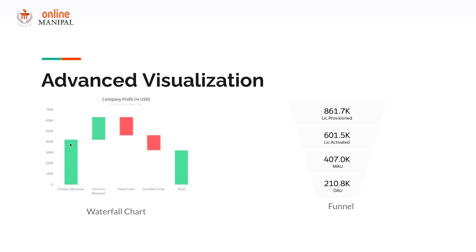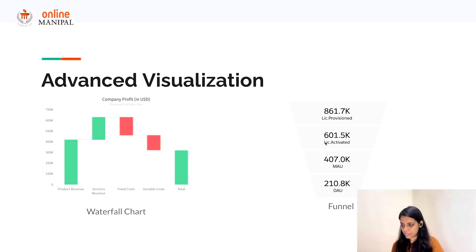For example, in this case it shows the various factors contributing to company profit. Product revenue and services revenue are adding to the profit, whereas fixed costs and variable costs are taking value away from the profit. Next is the funnel chart, which is used to visualize progressive reduction in data as it passes from one stage to another. Data in each phase is represented as a portion of 100 percent.